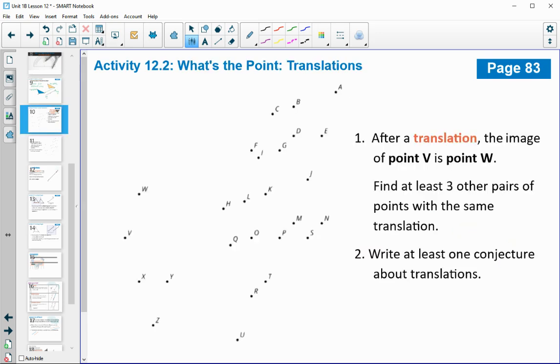So flip to page 83 and notice this diagram. I want you to get a colored pencil. I want you to pick two different colored pencils.